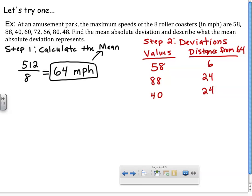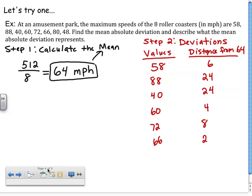Then I have 60, and 60 is 4 away from 64. Then I have 72, which is 8 away. Then I have 66, which is 2 away. Then I have 80, which is 16 away. And then lastly, I have 48, which is also 16 away. So, I have calculated the mean, and I have calculated my deviations.